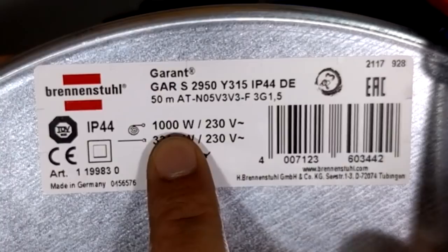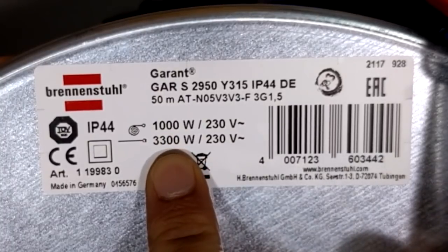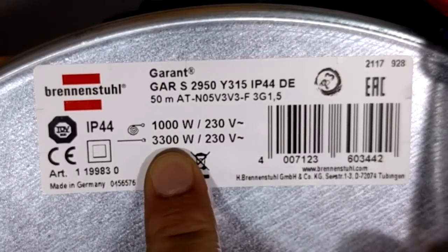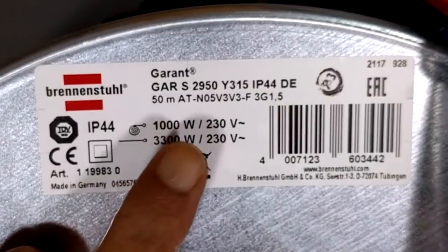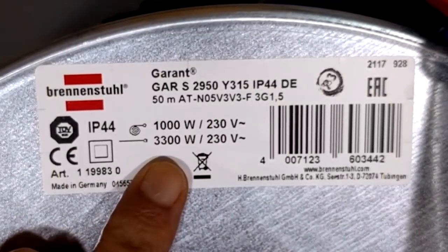At 230 volts, obviously, 1,000 watts is about 4 amps, and 3,300 watts is about, hang on a minute, 14 amps, roughly. Right, so, as I said, on the front of this guy, there is a thermal breaker.